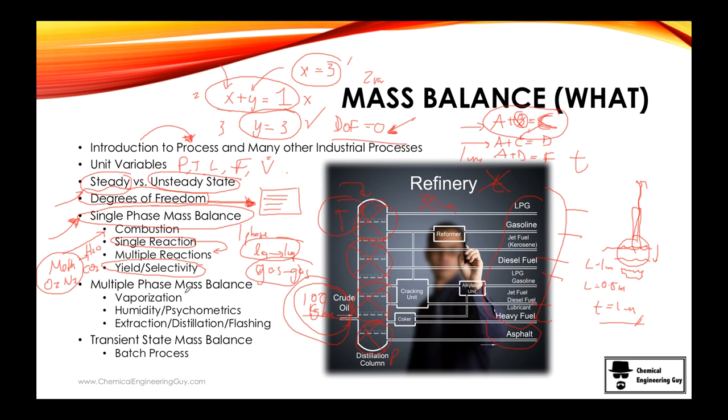Then we go for multiple phase mass balance. As the name implies, we no longer have one phase, we have two. So let's say liquid goes to vapor or a solid goes to a vapor and so on. Vaporization will be a good example. We have, I don't know, a black box as I told you. Goes in, goes out, a little bit of vapor goes, and this is liquid. So we have two phases.